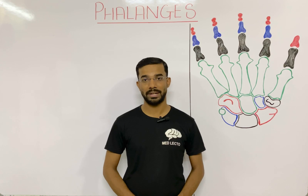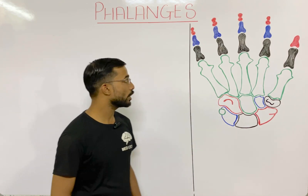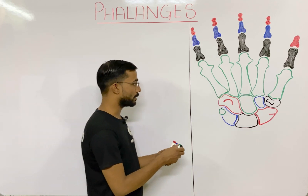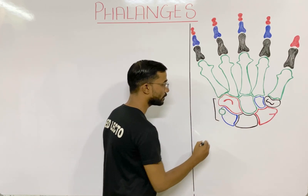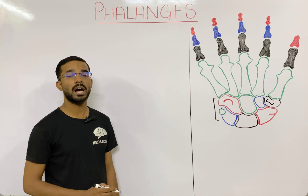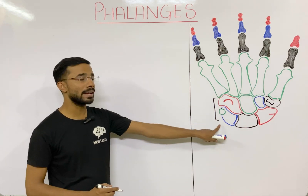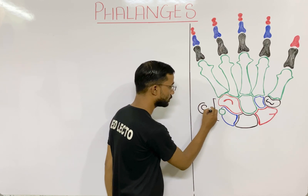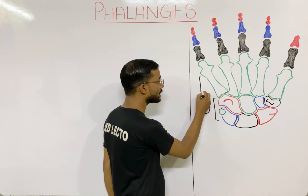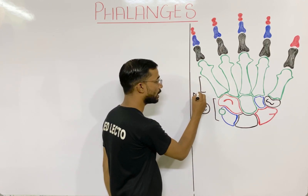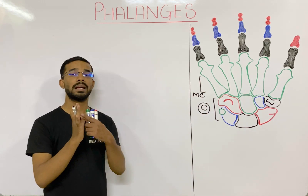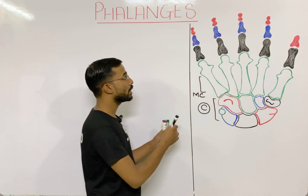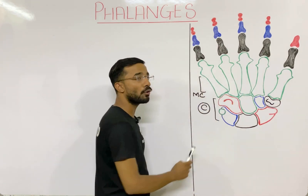First, these bones are called the carpal bones that actually make our wrist. Next you will see the metacarpal bones that actually make our palm, and after that you will see the fingers — four fingers and one thumb.